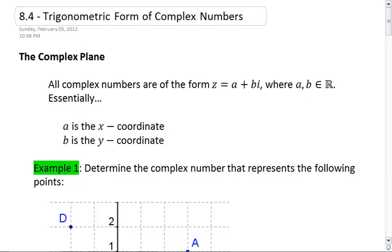All complex numbers are of the form z equals a plus bi, where a and b are real numbers. When we look at the complex plane, essentially your a is your x-coordinate, and your b is your y-coordinate.